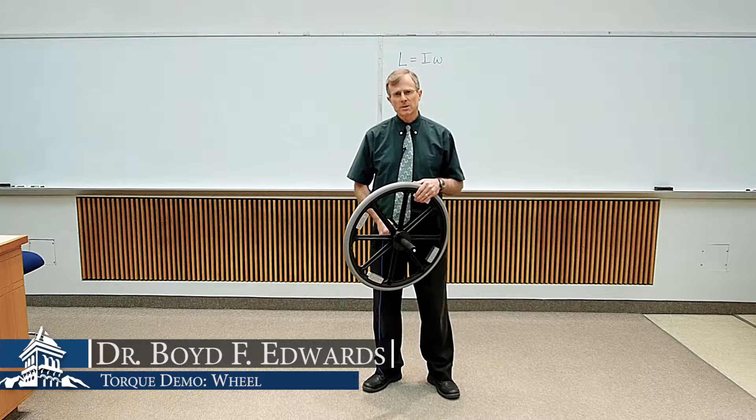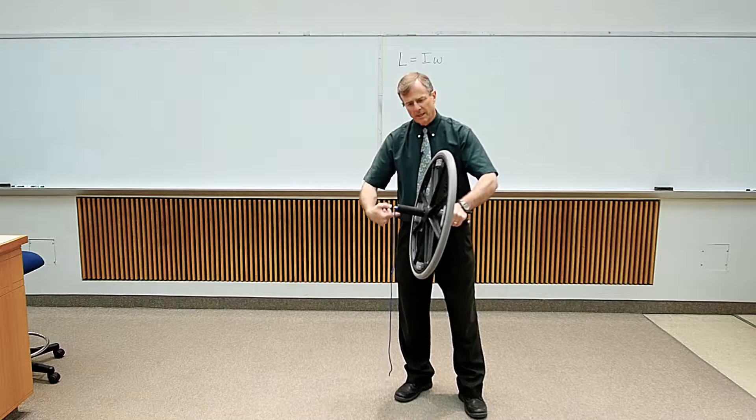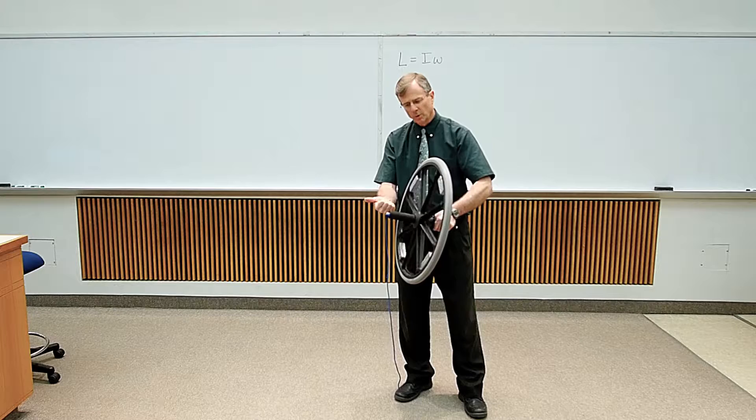I'm going to demonstrate the relationship between the torque and the change in the angular momentum of an object. This wheel, when it's spinning this way, is said to have angular velocity and angular momentum that way,